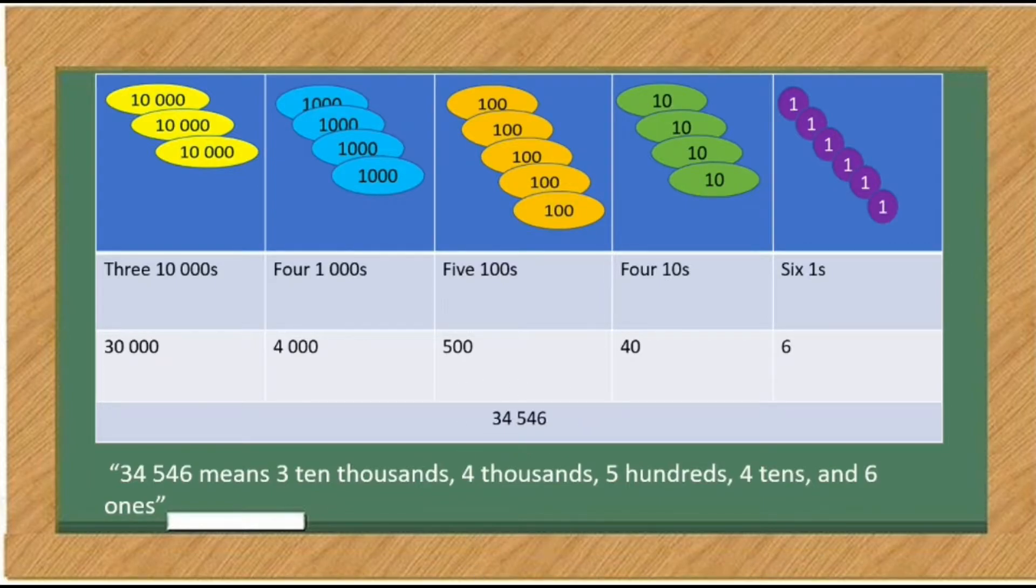34,546 means 3 ten thousands, 4 thousands, 5 hundreds, 4 tens, and 6 ones.